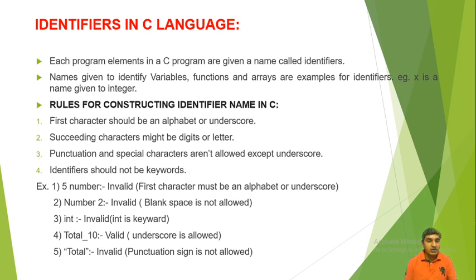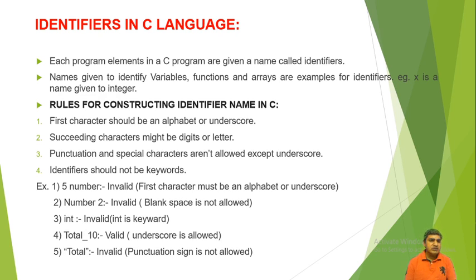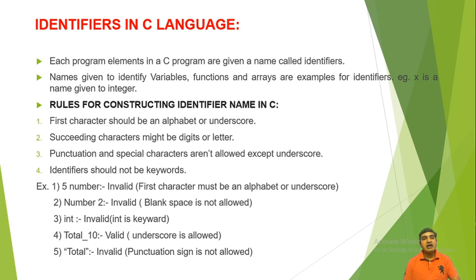The fourth example 'total_10' is valid because the first character is an alphabet and the underscore sign is allowed. The fifth example 'total.' is invalid because punctuation signs are not allowed. So identifier is a name given to a variable, function or array, and these four rules must be followed when constructing an identifier.